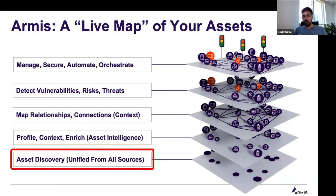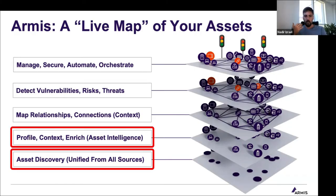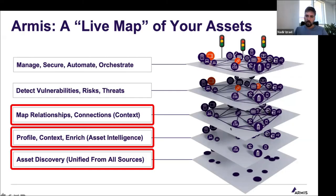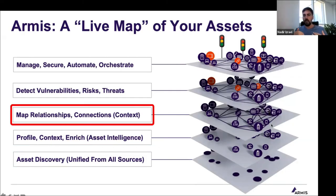It continues with the notion of context — profiling everything, fingerprinting every attribute and every aspect of it, and layering everything together, creating a relationship map of essentially everything that happens between assets and how they interconnect to each other. We think of that as the context layer of the map — the business context — because it transcends the assets themselves into what they mean to the organization: what application are they part of, who owns them, who's using them, and what role do they play within the organization as a whole.